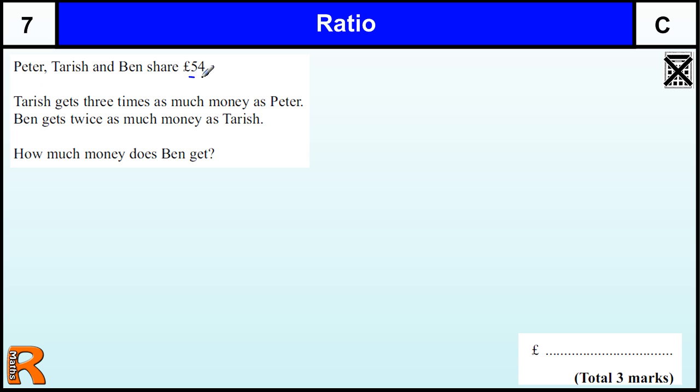So we're sharing £54 in such a way that Tarish gets three times as much as Peter, so if we start with Peter having one, then we have Tarish gets three times as much as Peter, and then we're left with Ben.